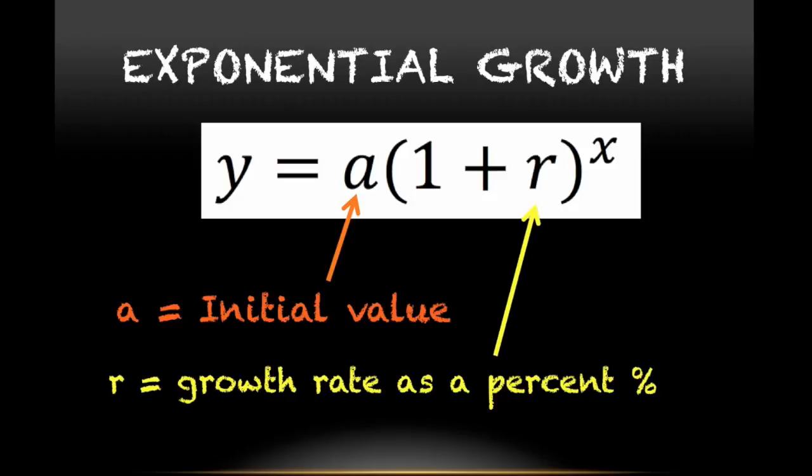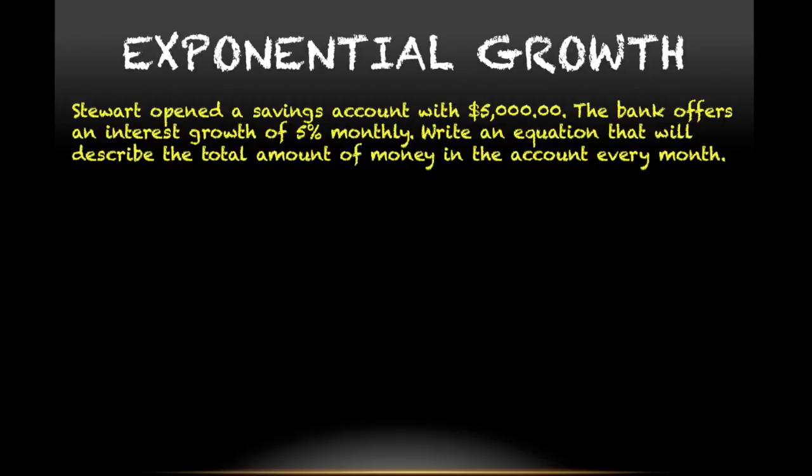To give you an example, we have this problem right here. Stewart opened a savings account with $5,000. The bank offers an interest growth of 5% monthly. Write an equation that will describe the total amount of money in the account every month. To start, how do we know that this is exponential growth?